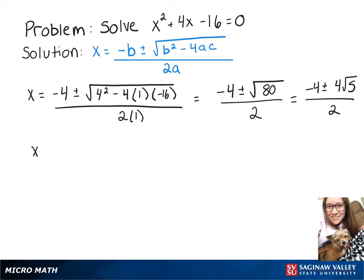So our x values here would be x equals negative 4 plus 4 root 5 over 2 or negative 4 minus 4 root 5 over 2.